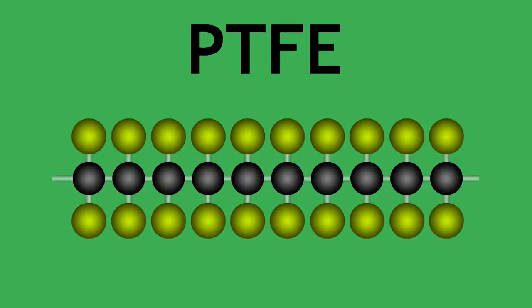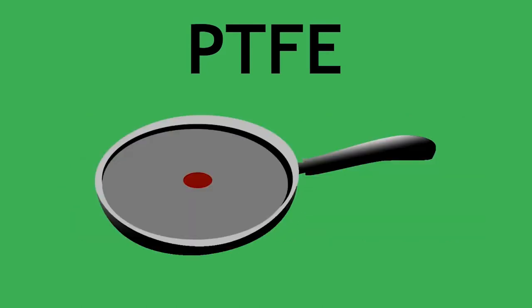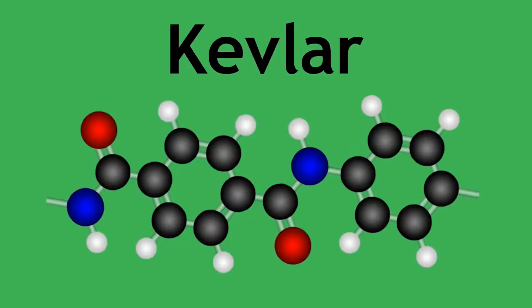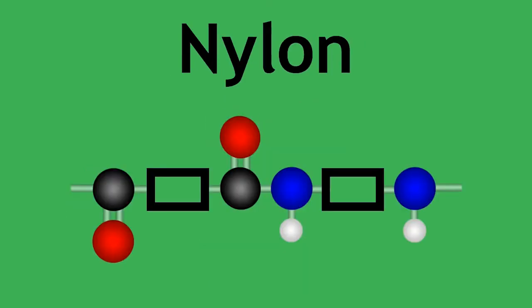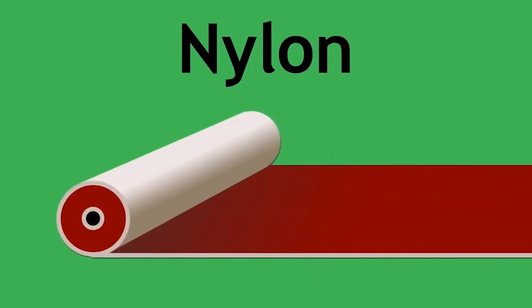Polytetrafluoroethene, also known as PTFE, is a non-stick coating on frying pans as well as being used in bearings and other low friction surfaces. Kevlar is a unique polymer in that it is used to form bulletproof vests and jackets. Nylon is used in textiles, clothing and carpets.